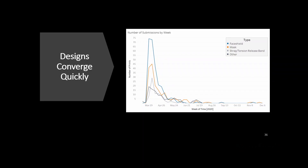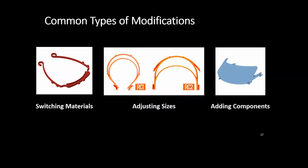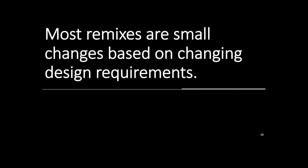We observed something strange — makers, who are generally a creative bunch, converged remarkably quickly on a small set of face shield designs within two months and then made small changes after that. They would switch out materials to whatever filament was available, adjust sizes to fit different people's bodies, or add a component from one design onto another. When we study remixing behaviors in maker communities, we see them making small changes based on changing design requirements or fitting to the context of point-of-care.